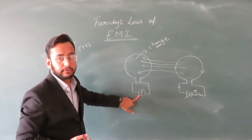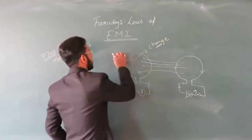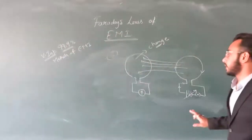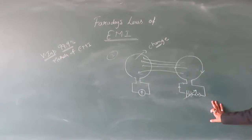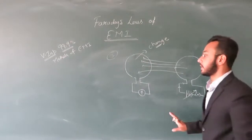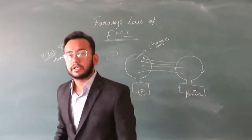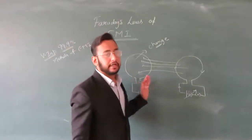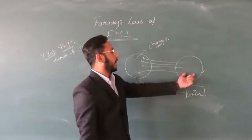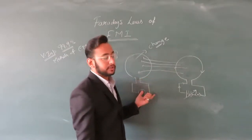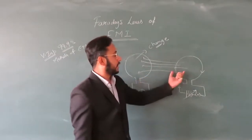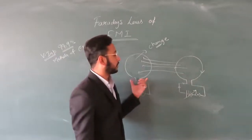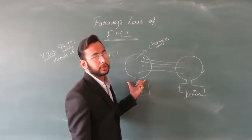Is this point clear? Say yes or no. This is the third method — and it is the most important method. These are the three methods. The first is by relative motion between the coil and the magnet.